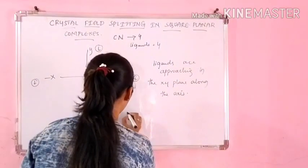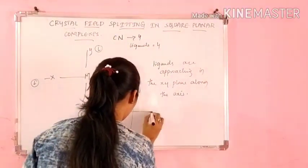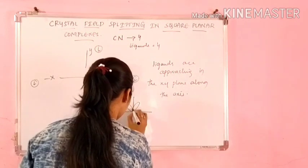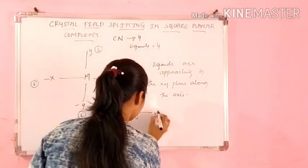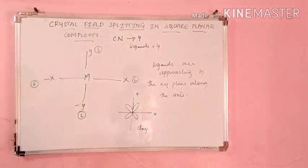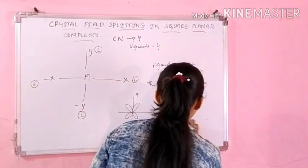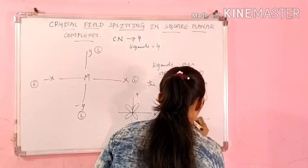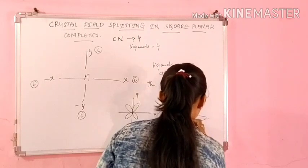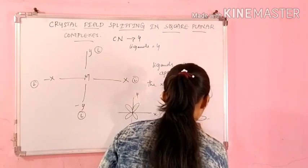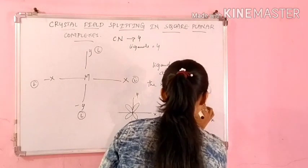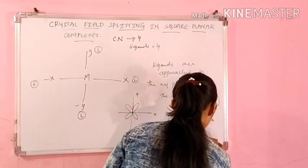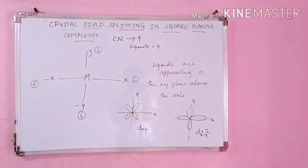Now you have the d orbitals. I am drawing the d orbitals. This one has lobes along x and y — so I am drawing d_xy. Here it is the d_xy orbital. Another one I draw. This is along x and y again — this is d x²−y², that is dx²−y². So here I have drawn 2 of the d orbitals.